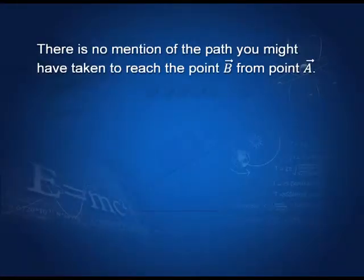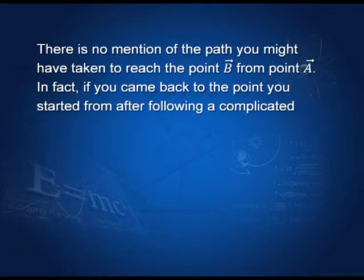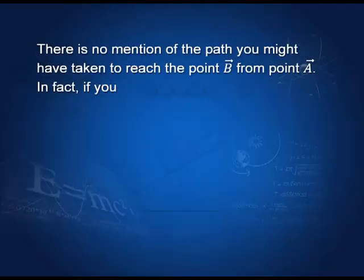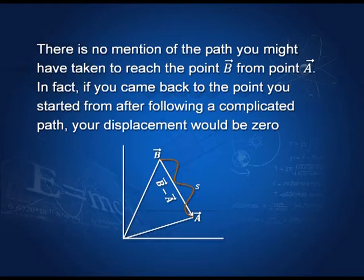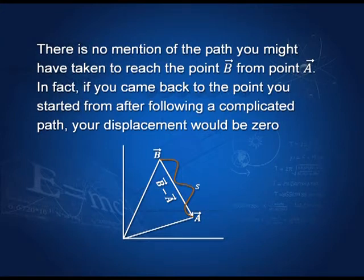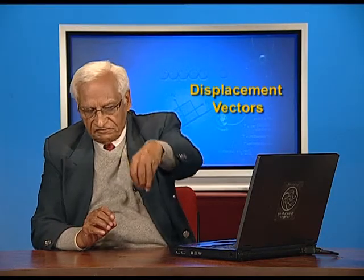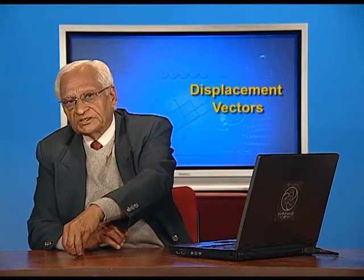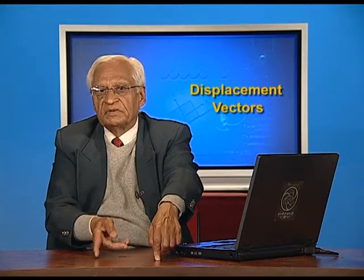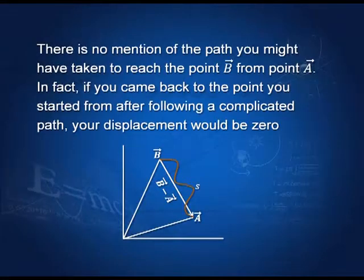Notice that we have not said anything about the path that might be taken between position A and position B. In fact, if you started at point A, took all kinds of curves and paths, and came back to point A, your displacement would be zero, because the difference between the final vector and initial vector is zero. So the path does not matter. What matters is the final position and the initial position, and the difference between these two positions is the displacement vector.